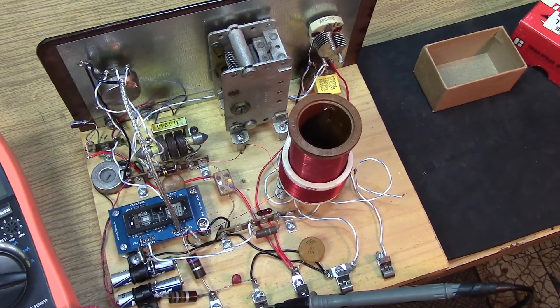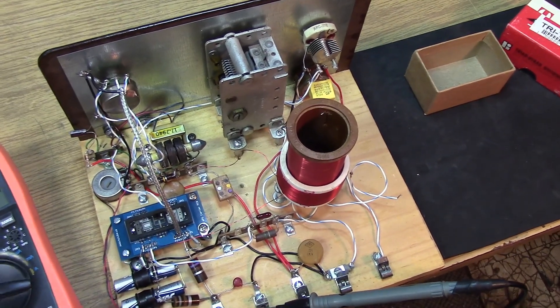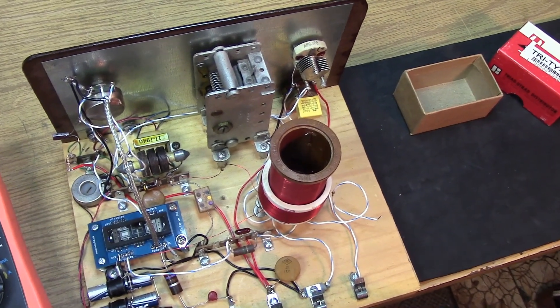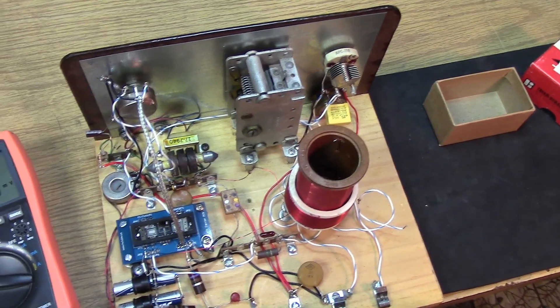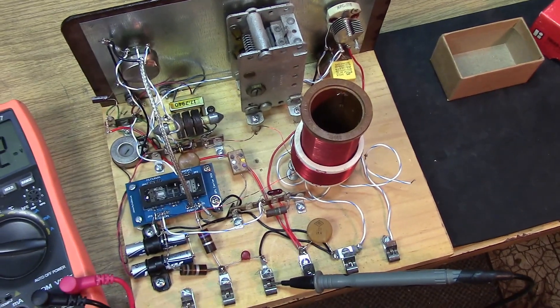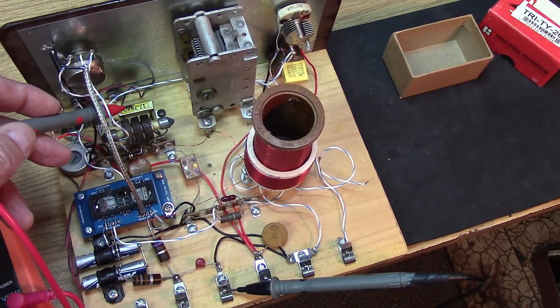We also have to hook up a 2,000 ohm load on the output terminals, and we'll be measuring across that load for all our measurements. That's our requisite secondary impedance with the little transformer we've added here.